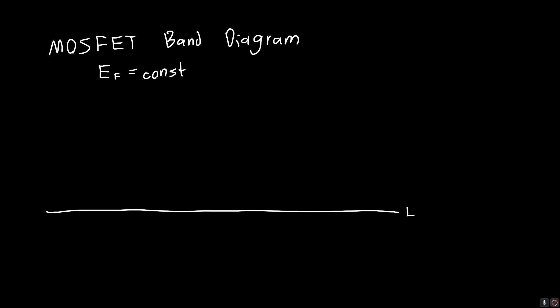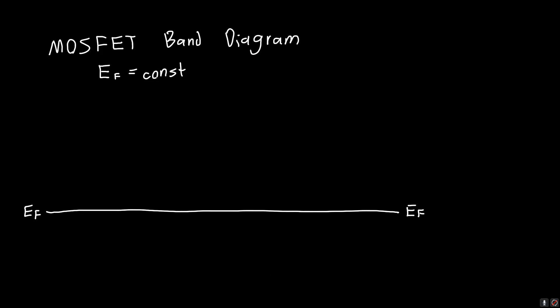This is EF. We know that it's split into three different regions, which I'm going to delineate by vertical dashed lines. We've got our semiconductor here, our oxide in the middle, and our metal over here. So let's first draw the band diagrams each independently, and then figure out how to merge them together.